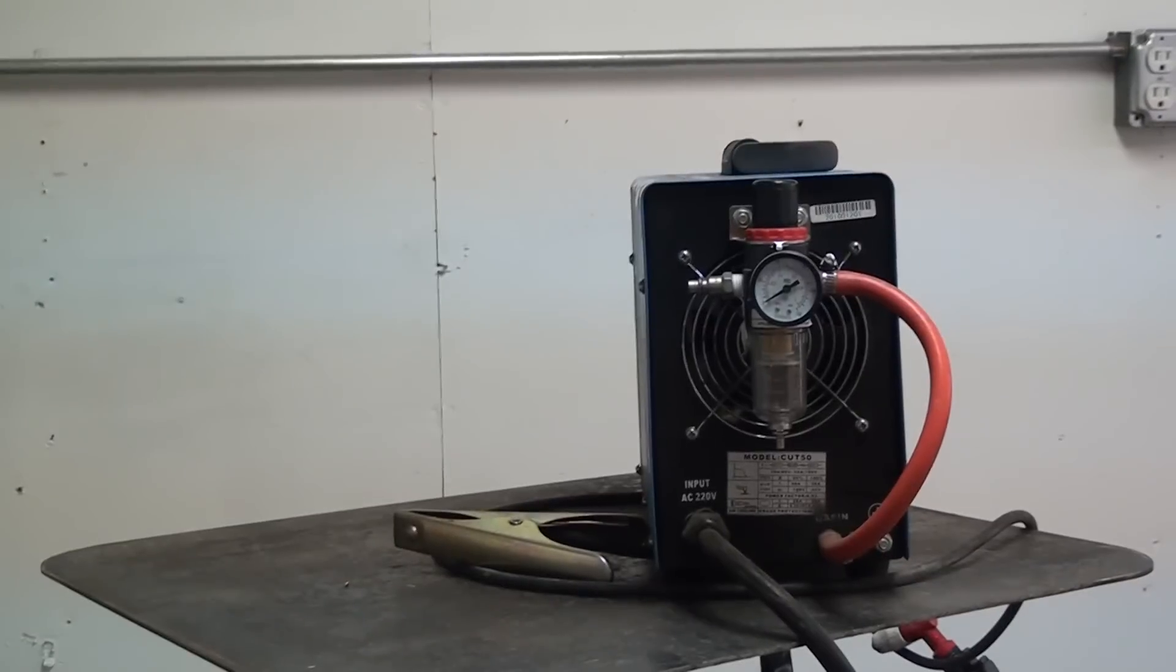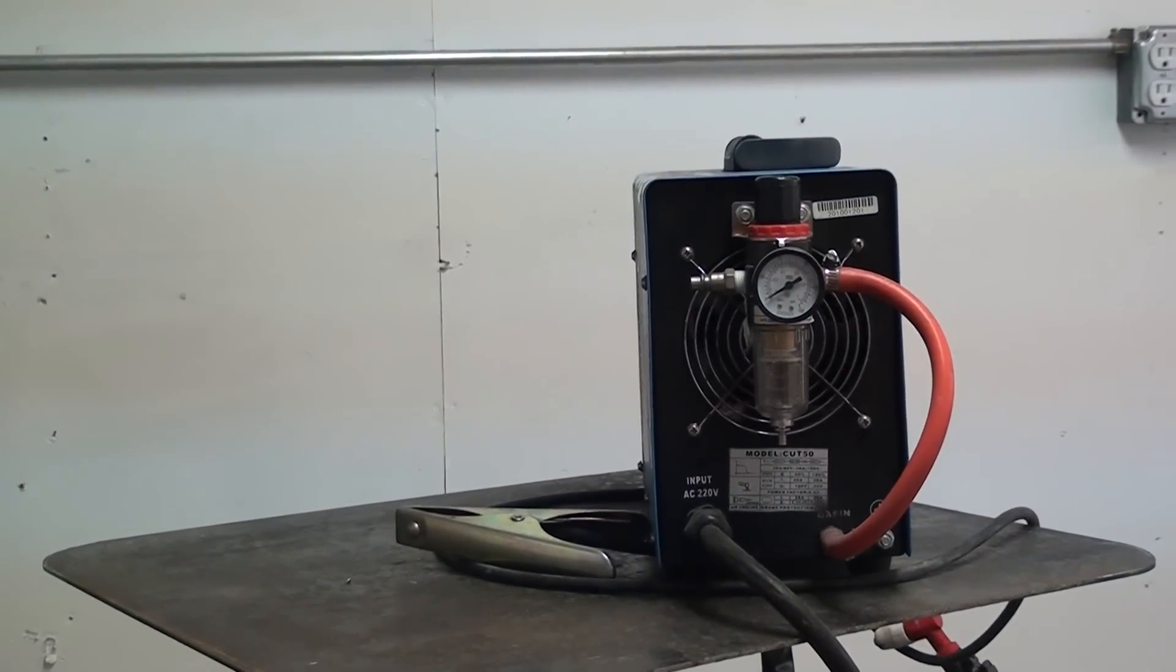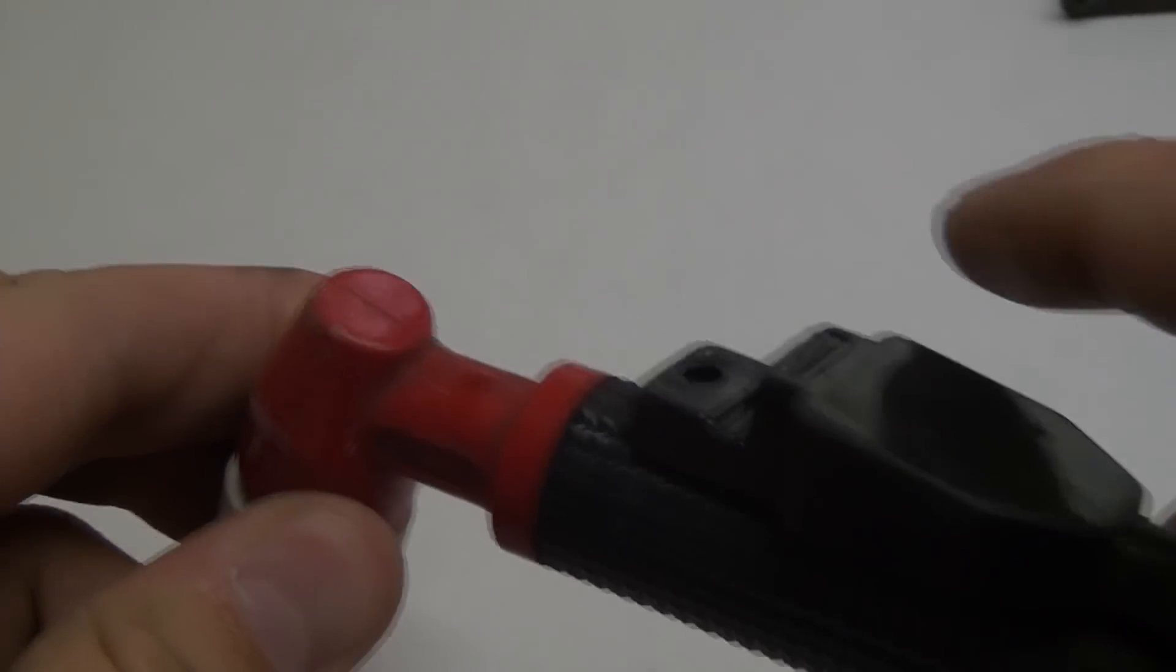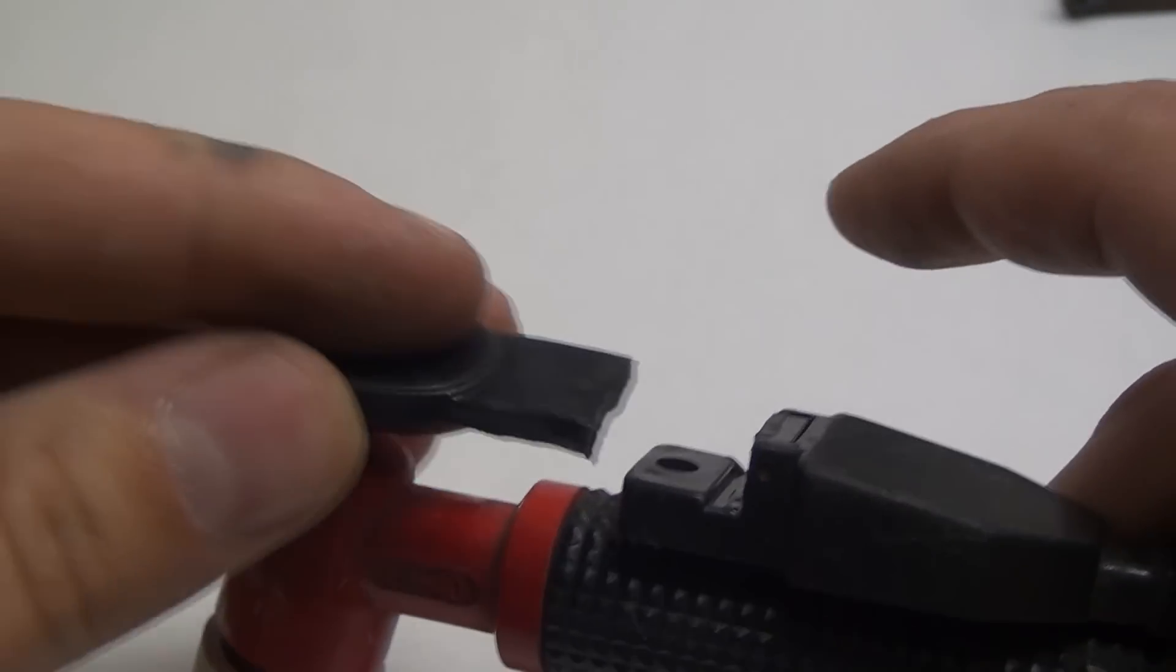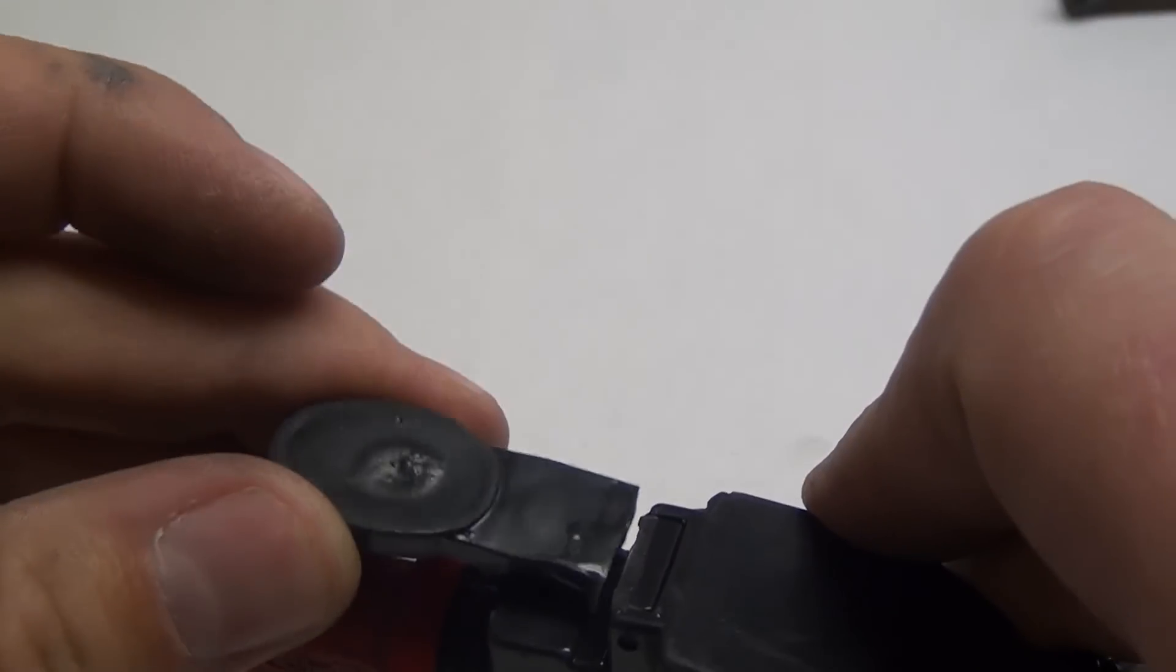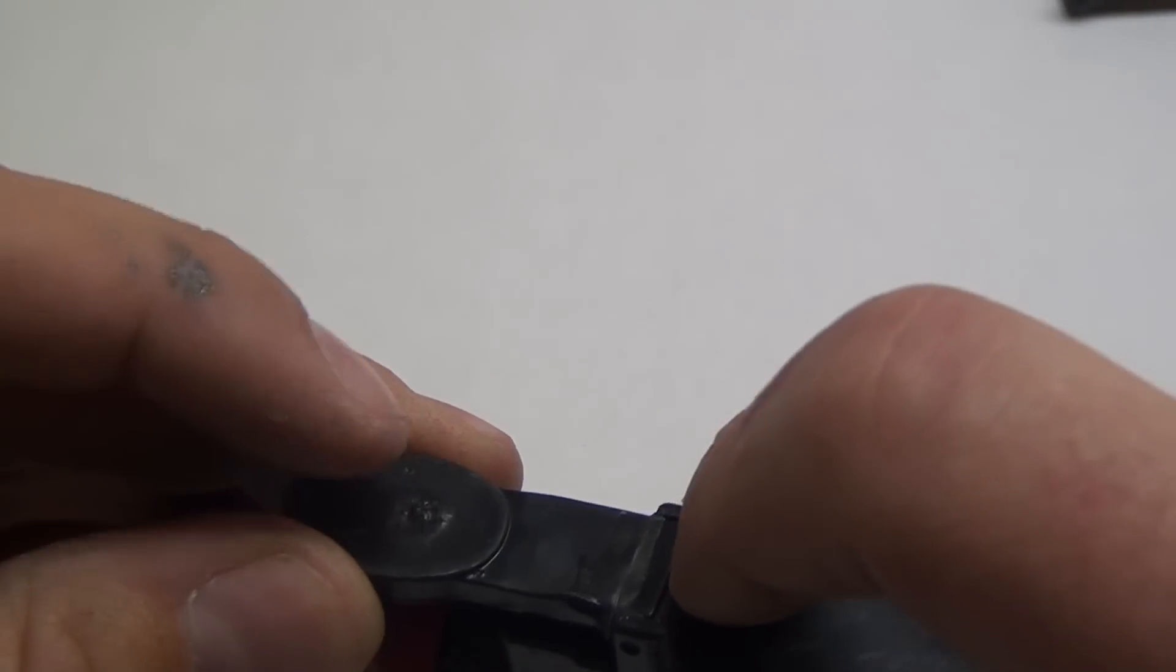I have had some problems with the torch, however, and I'm going to talk about those right now. The first one is I broke the trigger, which is a little paddle that sticks out the front of this trigger housing on the top of the torch, and I'm not sure how I broke that. I'm guessing it probably got stepped on or dropped.